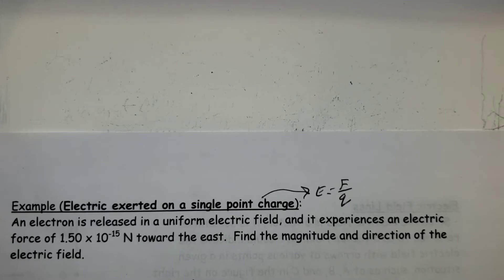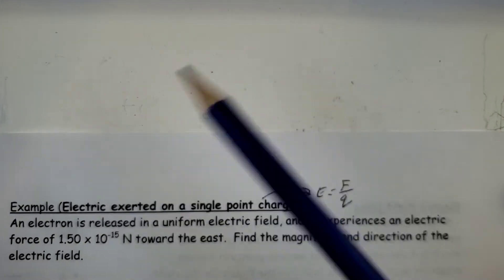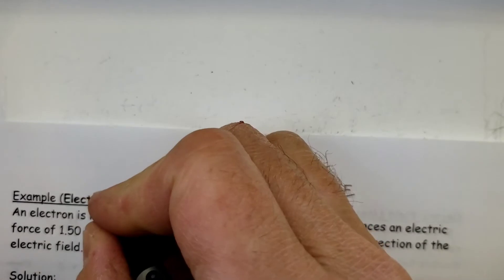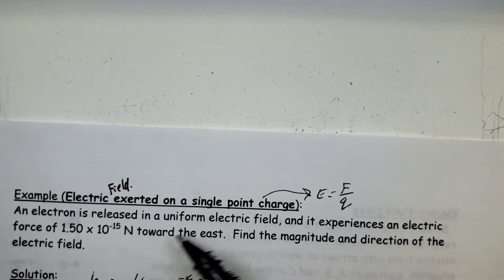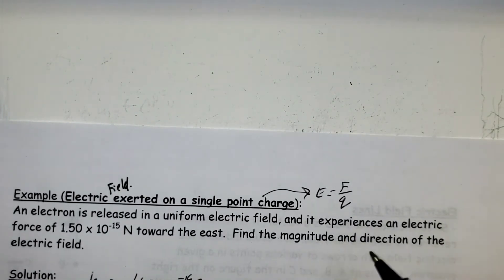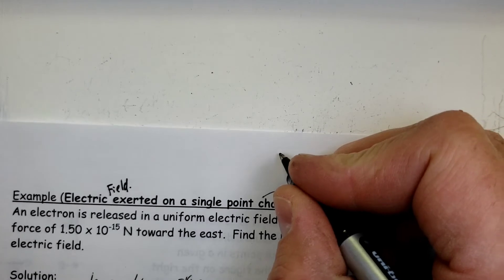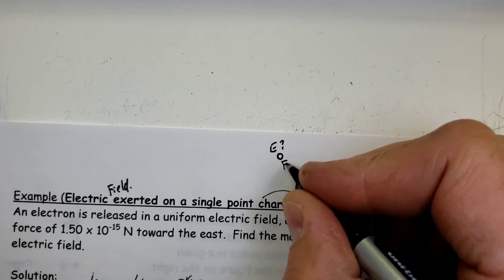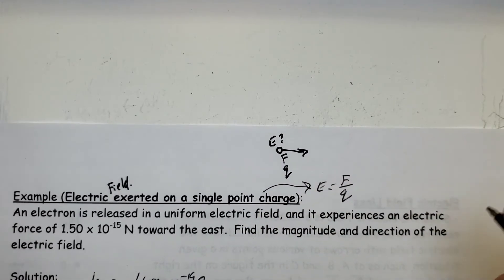Let's look at a couple of examples dealing with this. We'll look at using the two different equations. So we'll look at electric field exerted on a single point charge. E equals F over Q. An electron is released in a uniform electric field, and it experiences an electric force. So we have an electron, and it's experiencing something.